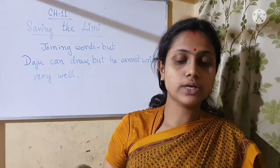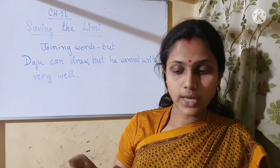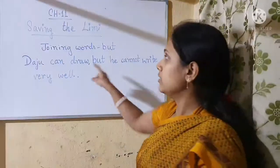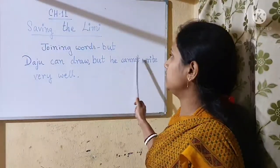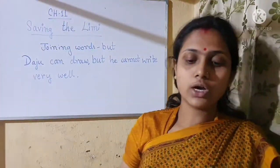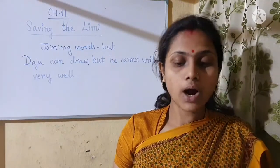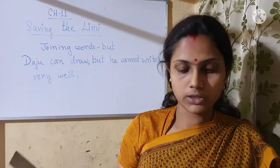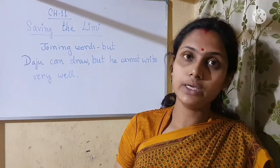Daju can draw, but Daju cannot write very well. So when we want to talk about these two ideas together, we use 'but'. We are not telling these two things separately — we are telling these two parts together in one sentence. We use 'but' to show the difference between what Daju can do and what he cannot do. 'But' is a joining word — we use it to connect two ideas that are different from each other.